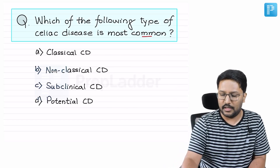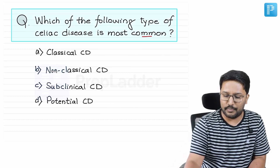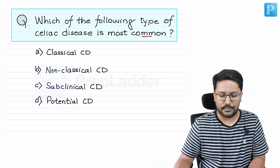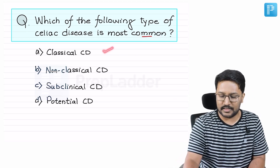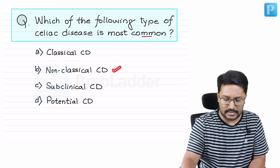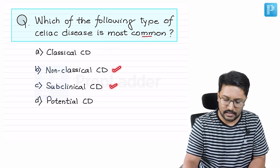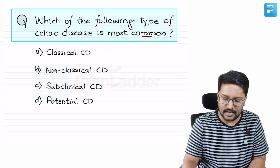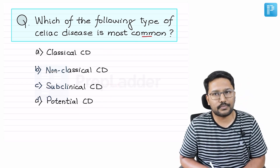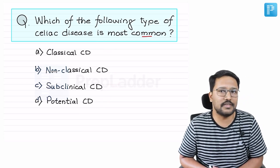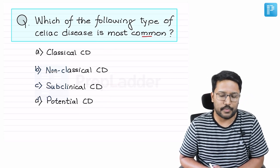There is one more question on the topic: which of the following types of celiac disease is most common? The four options are classical celiac disease, non-classical celiac disease, subclinical celiac disease, and potential celiac disease.